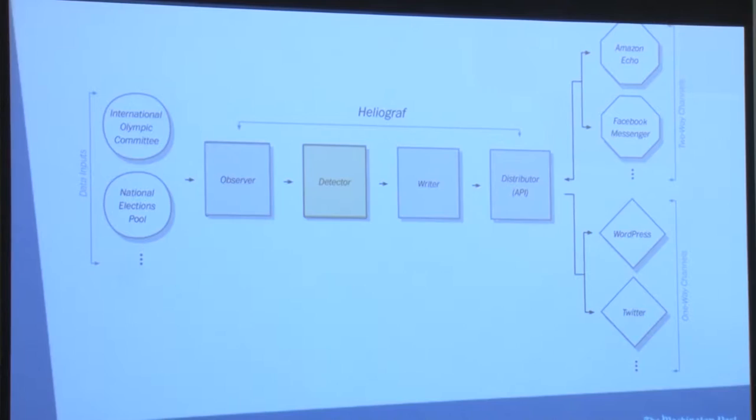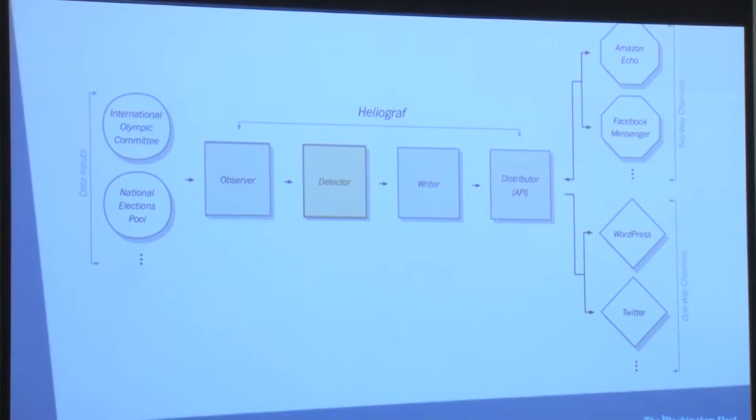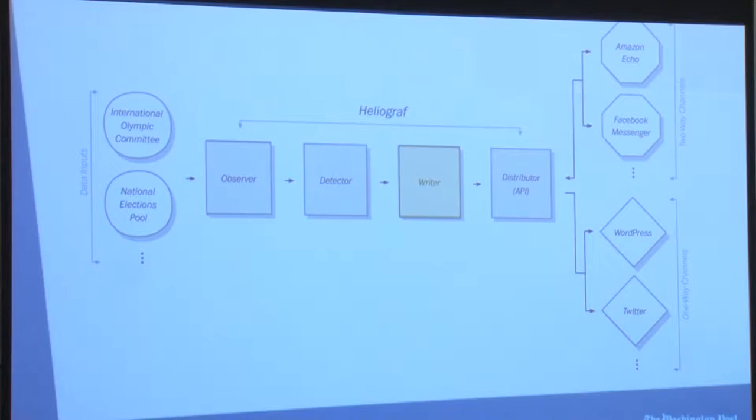In the case of the Olympics, this was much simpler — there was only one event: a medal being awarded. The Writer is one of the most interesting components of Heliograph. How do we take this data and convert it into a story? We do it through a process known as natural language generation, or NLG. While there are many different types of NLG, it's generally a three-step process: document planning, microplanning, and surface realization.